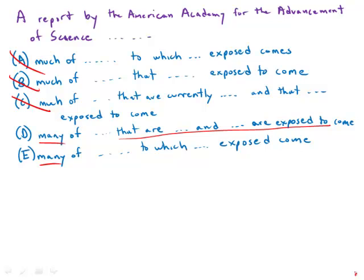But notice that some of these choices have 'were exposed to,' exposed to, whereas others take the 'to' that goes with 'exposed' and put it at the beginning of the clause: 'to which North Americans are exposed.'